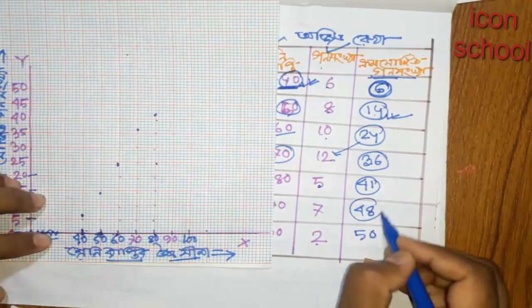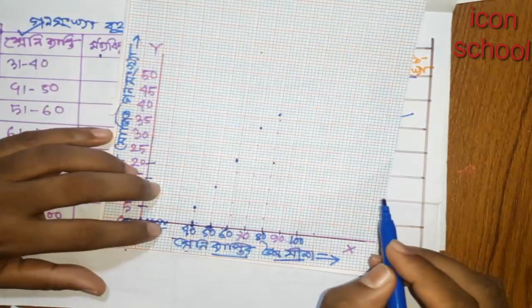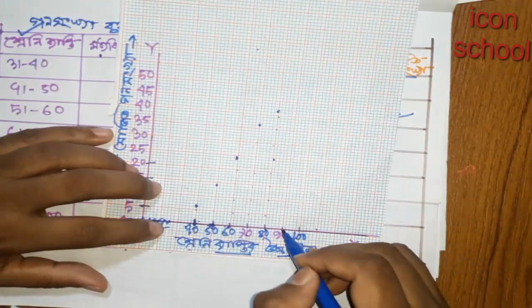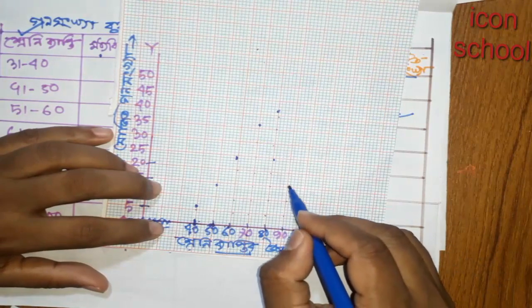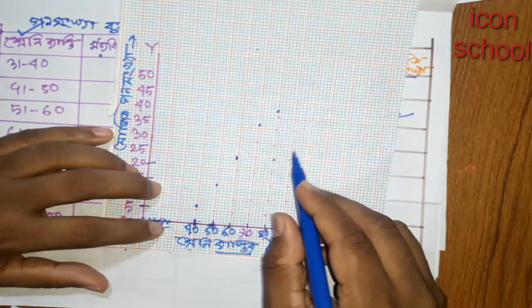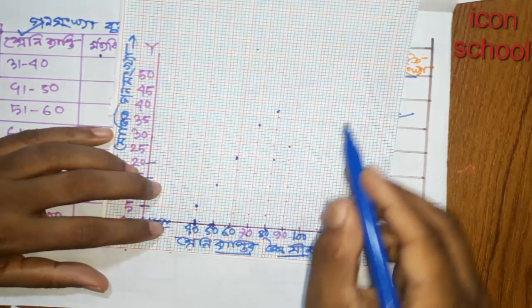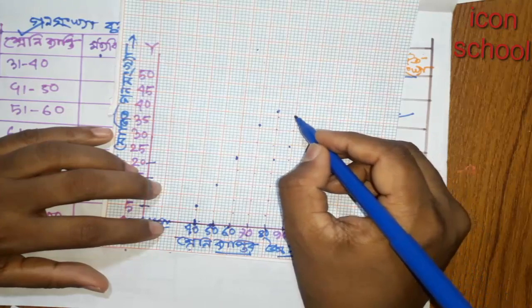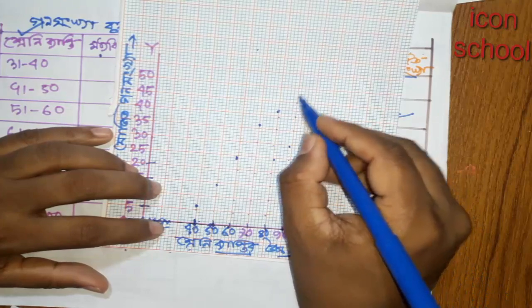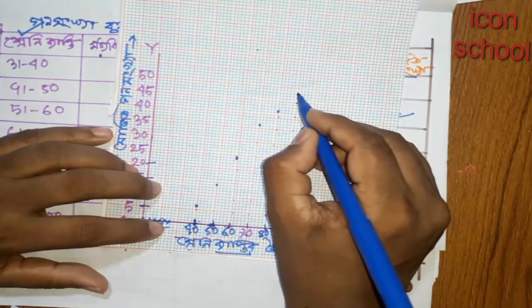Then we have 44. Look, it's 48. 5, 10, 25, 25, 35, 35, 35, 45, 45. This is 48.